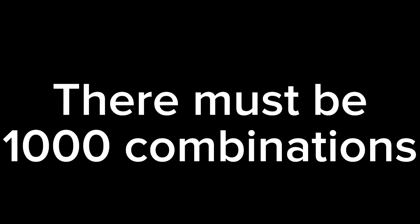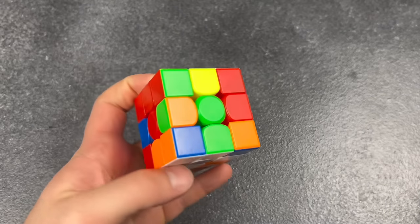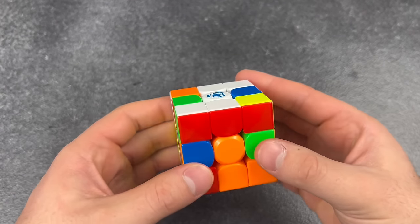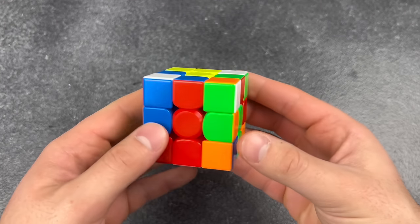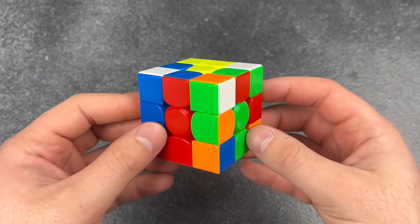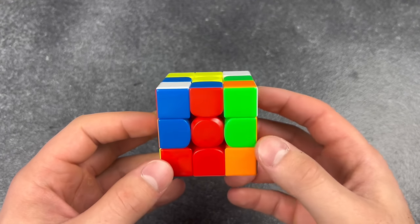There must be like a thousand combinations. That's so cool, there's got to be like a thousand combinations on that thing. Try 43 quintillion.